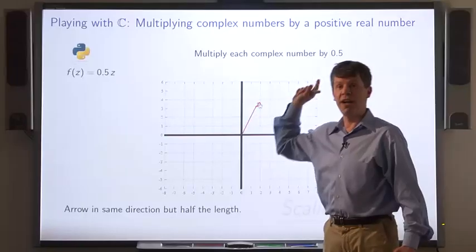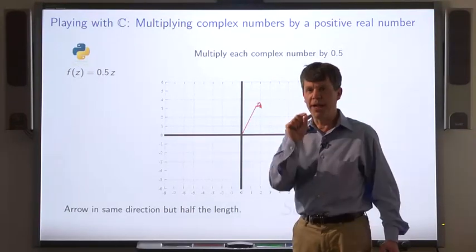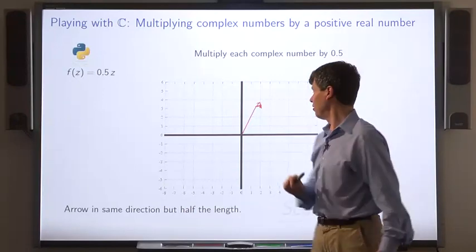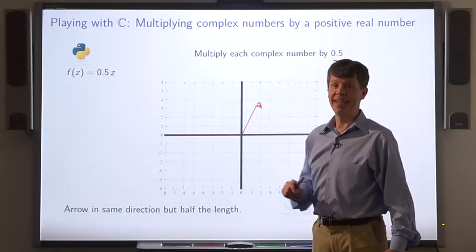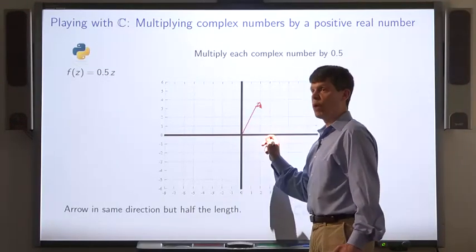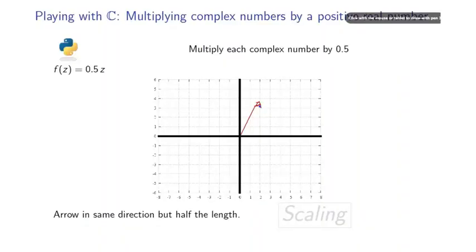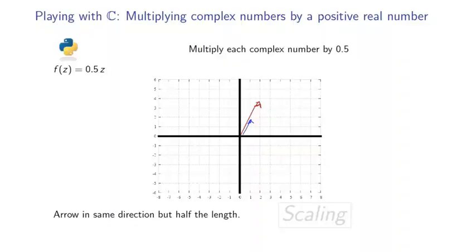When we multiply the complex number by 0.5, what we're doing is multiplying the real part by 0.5, halving the real part and halving the imaginary part. As a consequence, the arrow representing that complex number goes one unit to the right and two units up. It gives you an arrow in the same direction but half the length. This is called scaling.